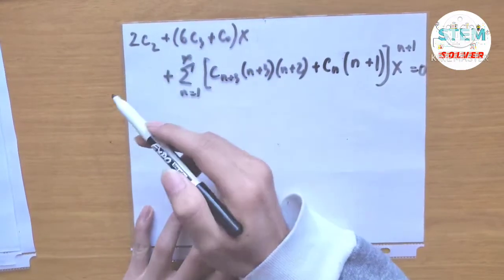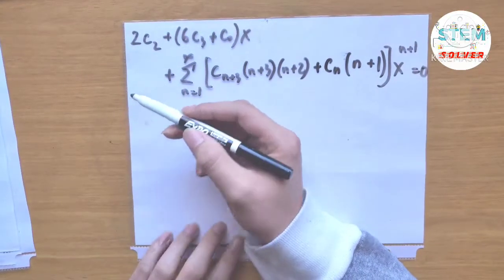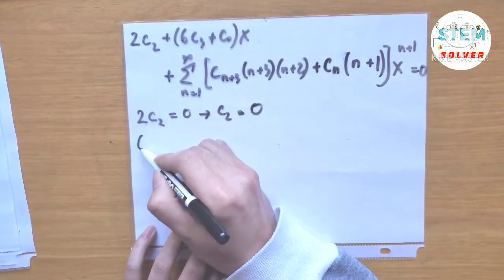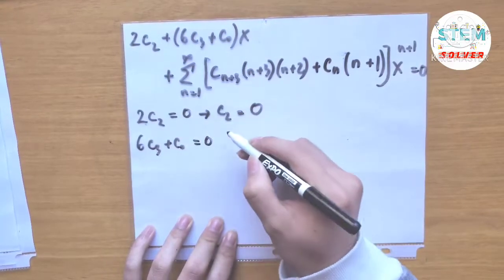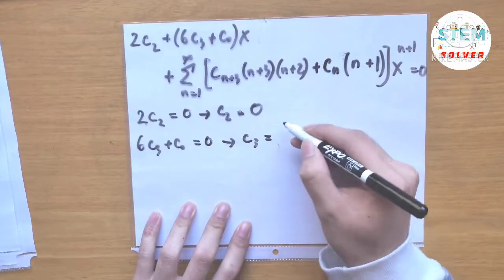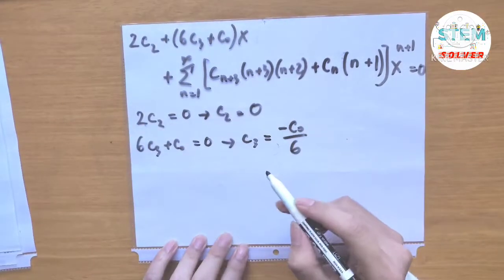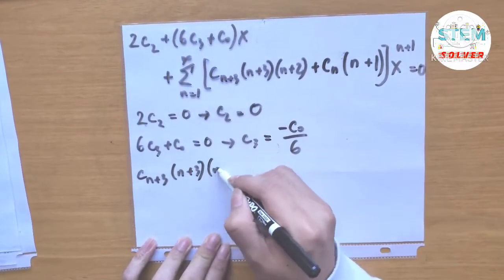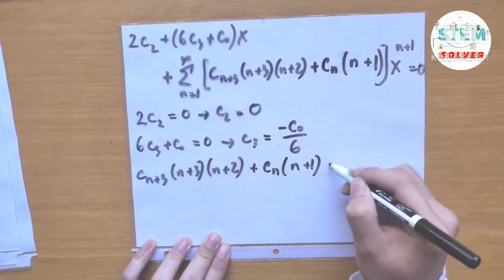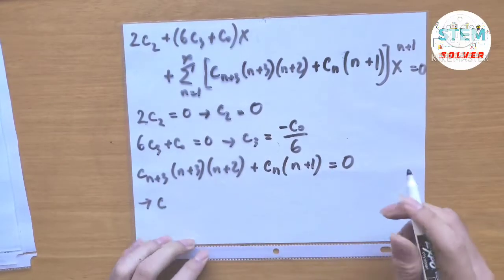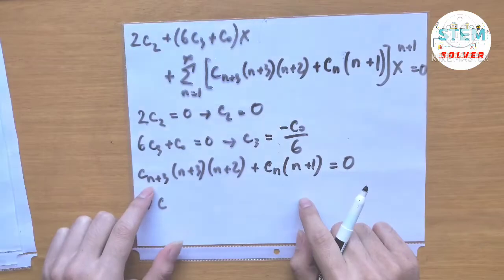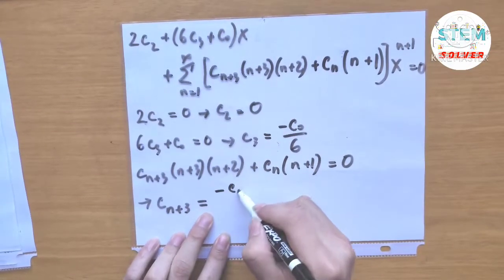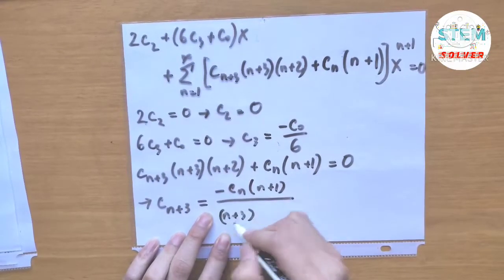Setting coefficients equal to zero: for x to the 0, we have only 2c_2 equals 0, so c_2 equals 0. For the x term, 6c_3 plus c_0 equals 0, so c_3 equals negative c_0 over 6. For the general recurrence relation, c_{n+3}(n+3)(n+2) plus c_n times (n plus 1) equals 0, giving c_{n+3} equals negative c_n times (n plus 1) divided by (n plus 3)(n plus 2), starting from n equals 1.